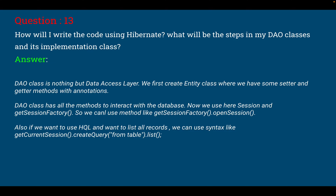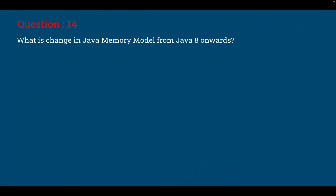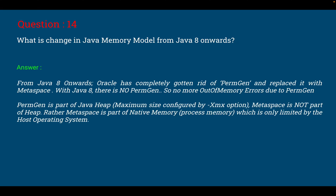Question number 14: what is the change in the Java memory model from Java 8 onwards? From Java 8 onwards, Oracle has completely gotten rid of the Permanent Generation (PermGen) and replaced it with Metaspace. With Java 8, there is no PermGen, so no more OutOfMemoryError due to PermGen. PermGen was part of the Java heap with a maximum size configured by the -Xms option. In the case of Metaspace, introduced in Java 8, it is not part of the heap — rather, it is part of native memory (process memory), which is limited only by the host operating system.